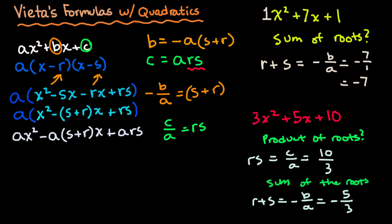The two main takeaways: for quadratics with roots R and S, the sum of the roots R plus S equals negative B over A, and the product of the roots RS equals C over A. These are for quadratics — there are slight differences for larger polynomials. We'll explore the many interesting parts of Vieta's formulas in future videos.